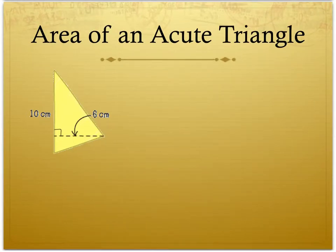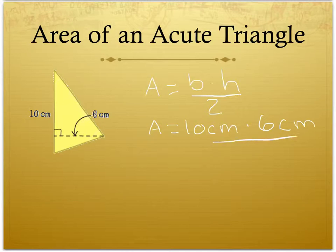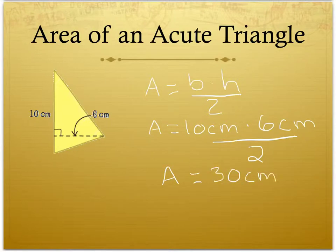Now we are going to solve for the area of this acute triangle. We know that area is equal to base times height divided by 2. So our area is equal to 10 cm times by our height of 6 cm, divided by 2, which gives us an area equal to 30 cm squared.